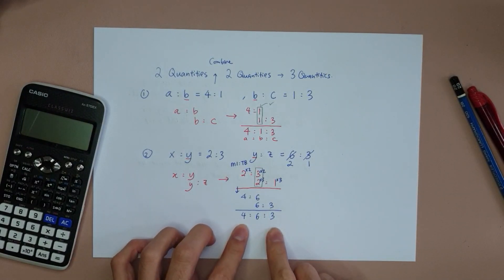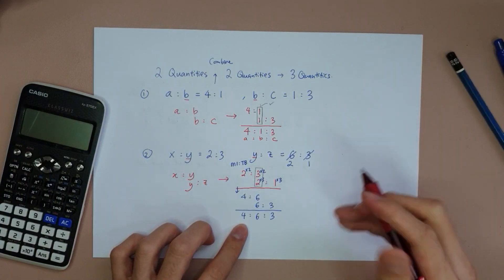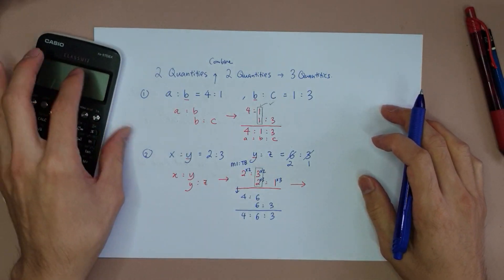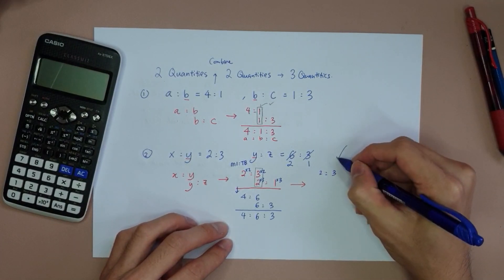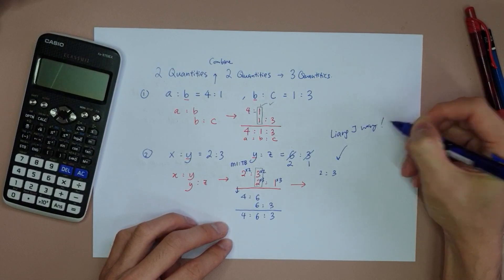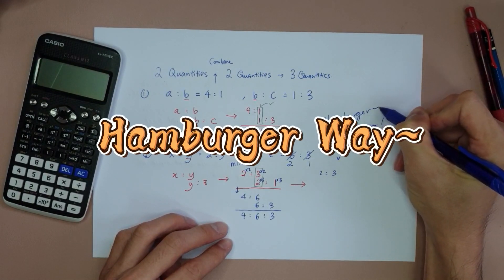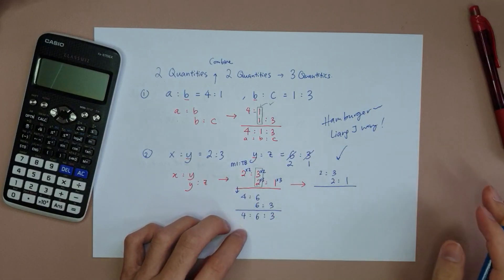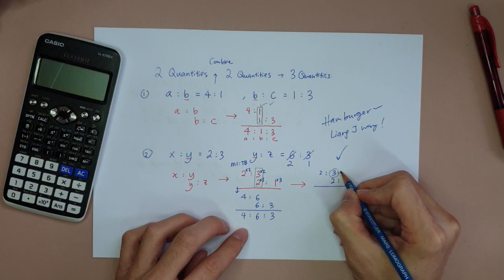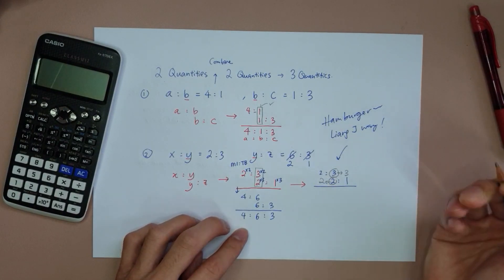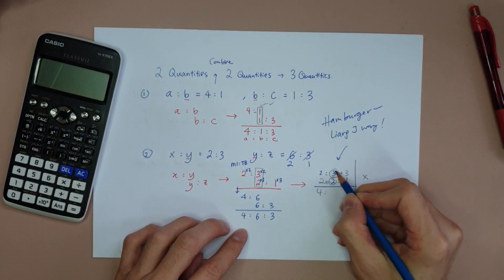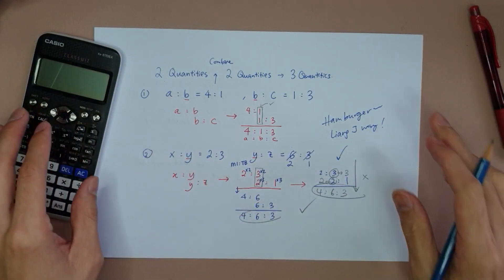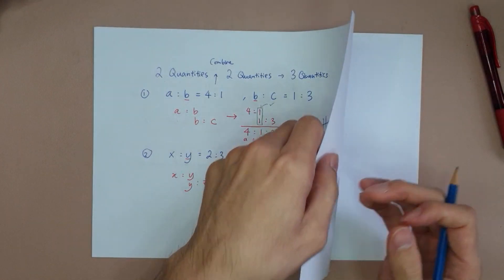I personally prefer another better way — the Liang Ji hamburger way. So with 2 to 3 and 1 to 2: you circle the 3, pull it across and place it on the other ratio's side; circle the 2, pull it across too. No particular reason — we just do it. Then times everything together: 2 × 2 = 4, 3 × 2 = 6, 3 × 1 = 3. You get 4 : 6 : 3, the same answer as the textbook method. Both are acceptable.